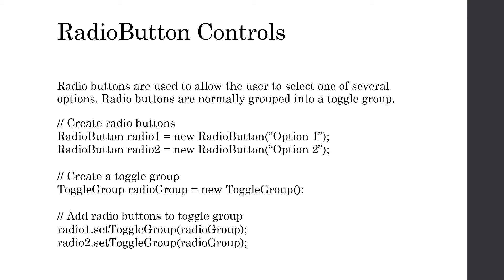In this video we're going to take a look at both radio button and checkbox controls. I want to include both in the same video because the intended behavior is very similar. In either case you typically see radio buttons or checkboxes in a form of some kind. With radio buttons you're selecting one item out of several, whereas with checkboxes you can select as many options as you want. Because radio buttons select one item out of several, there needs to be a way to group them — we call this a toggle group.